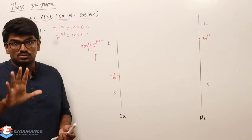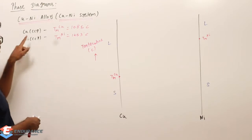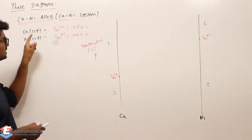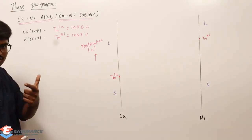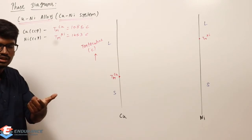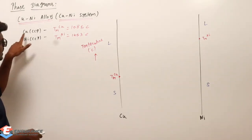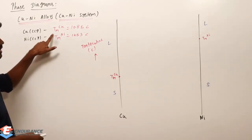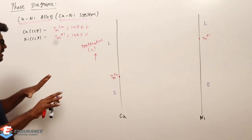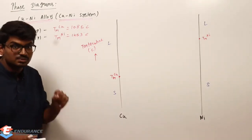As of now I am not alloying it — I am taking copper separately and nickel separately. Copper is a cubic close-packed (CCP) crystal structure, and nickel is also cubic close-packed. So the Hume-Rothery rule is satisfied — the crystal structure has to be the same. The melting point of copper is 1085°C and the melting point of pure nickel is 1453°C.